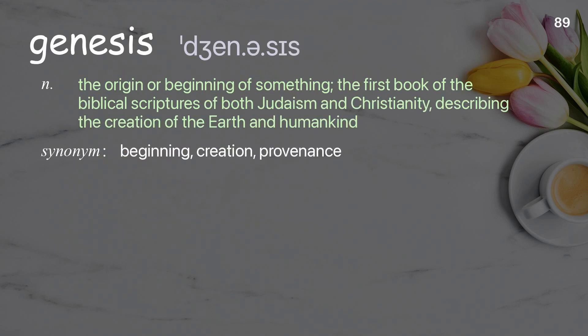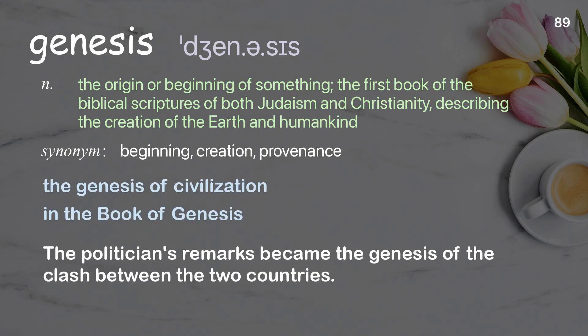Genesis: the origin or beginning of something; the first book of the biblical scriptures of both Judaism and Christianity, describing the creation of the earth and humankind. Examples: the genesis of civilization, in the book of Genesis. The politicians' remarks became the genesis of the clash between the two countries.